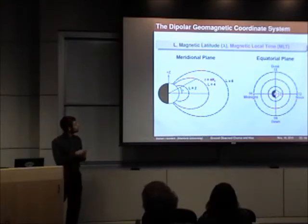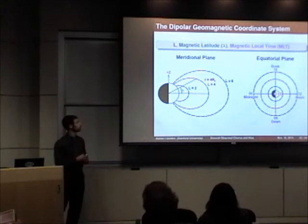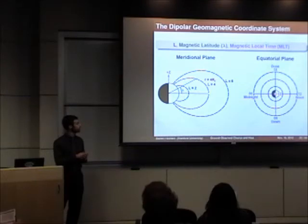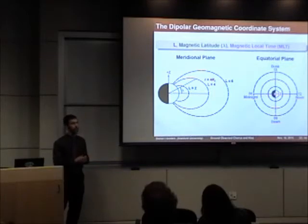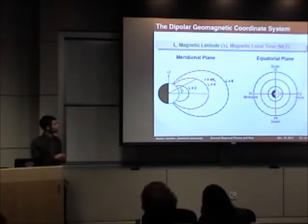In the meridional plane, where the north geomagnetic pole is represented by the positive z-axis pointing up, the L-shell or L-value is defined as follows. If you trace a given magnetic field line until it crosses the geomagnetic equator, the distance from the center of the Earth to that equatorial crossing in units of Earth radii is the L-value of that dipole magnetic field line. For example, the field line shown in red, which crosses the equator four Earth radii from the center of the Earth, would be described as L equals 4.